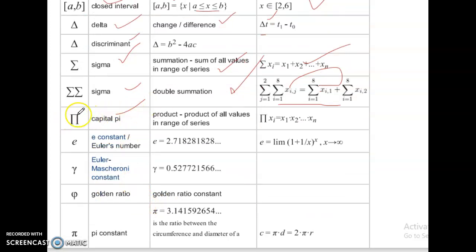Capital Pi. Product of all values range of series. Capital Pi x1, x2, up to xn. Product of all values range of series. That is capital Pi.